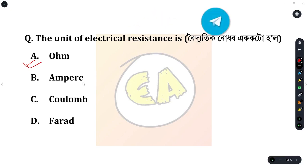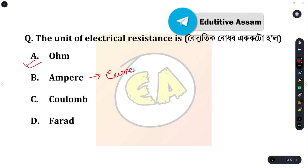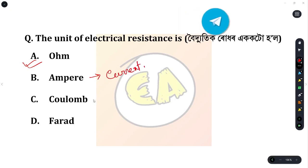Additionally, ampere is the unit of current — it is used to measure how much current flows. Coulomb is the unit of electrical charge. Farad is the unit of capacitance.